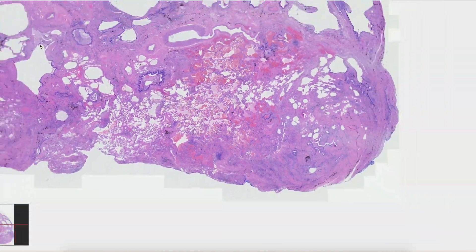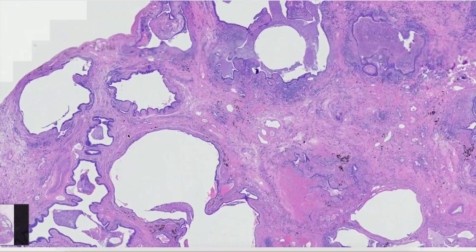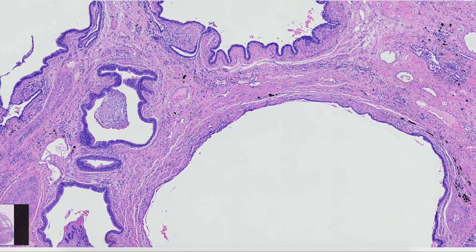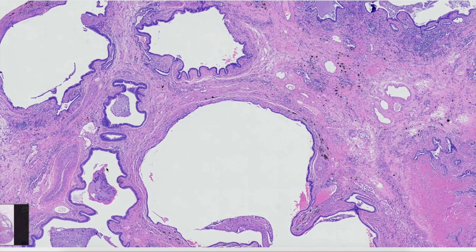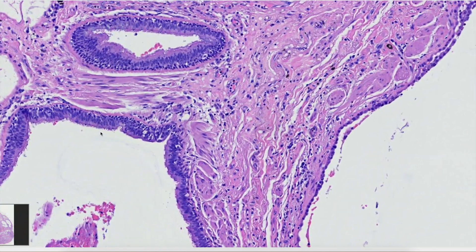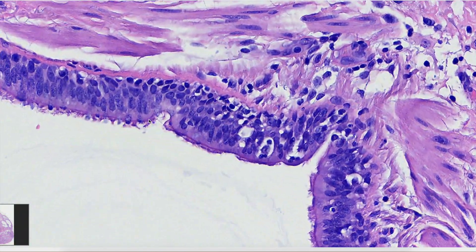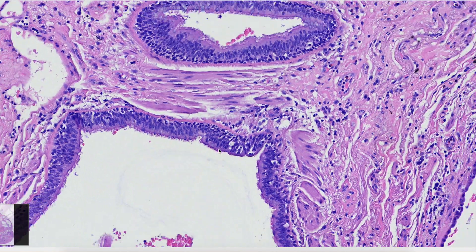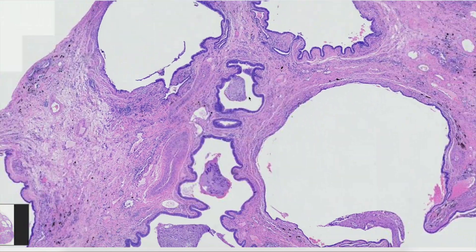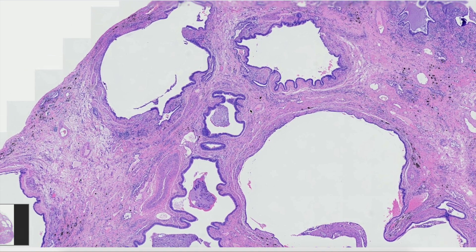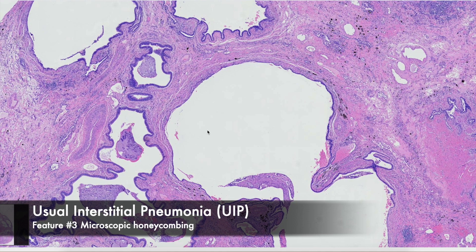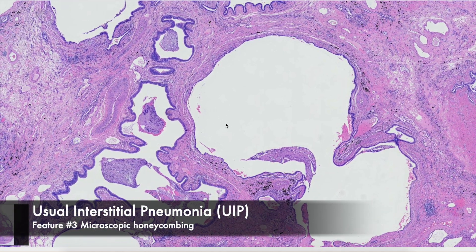In the abnormal areas, we see dense fibrosis and loss of the normal alveolar architecture. Instead, we have cystically dilated spaces lined by metaplastic bronchial-type epithelium, with cilia and terminal bars visible. These cystically dilated spaces stacked on top of each other with intervening areas of fibrosis is what we call microscopic honeycombing.